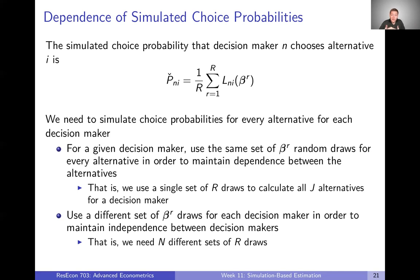We're also going to do this for every individual or decision-maker in our data set. But when we think about different individuals, we want to use a different set of beta draws for each decision-maker to maintain independence between them. We don't necessarily think that everyone has the same beta, so we don't want to draw one set of betas and use that for everyone. This means we need N different sets of R draws to do this simulation for every individual in the data set.